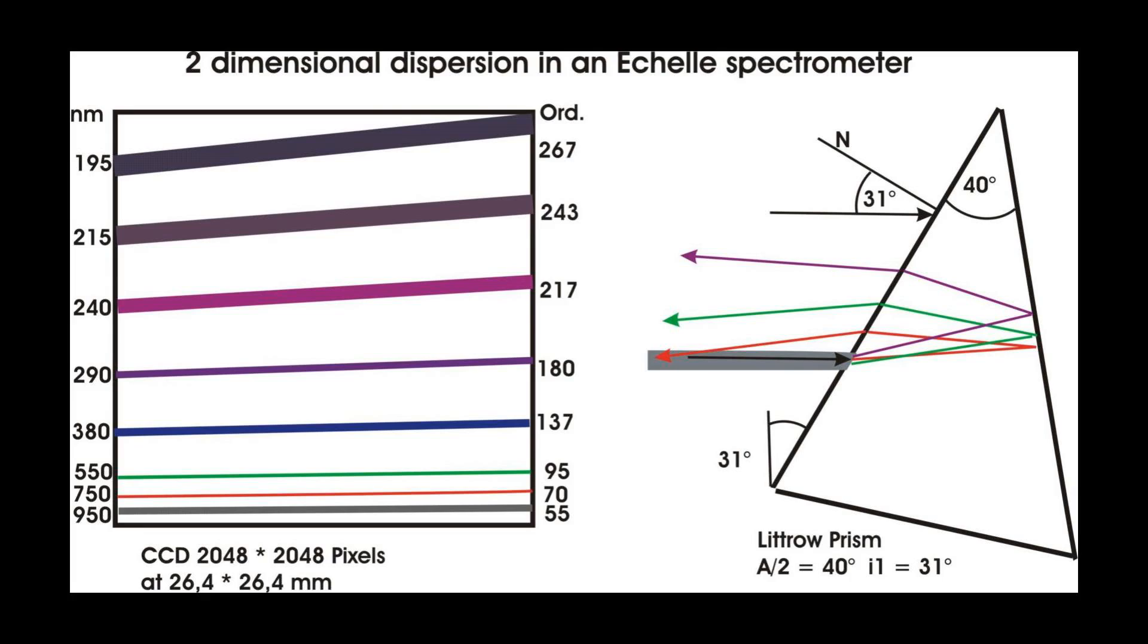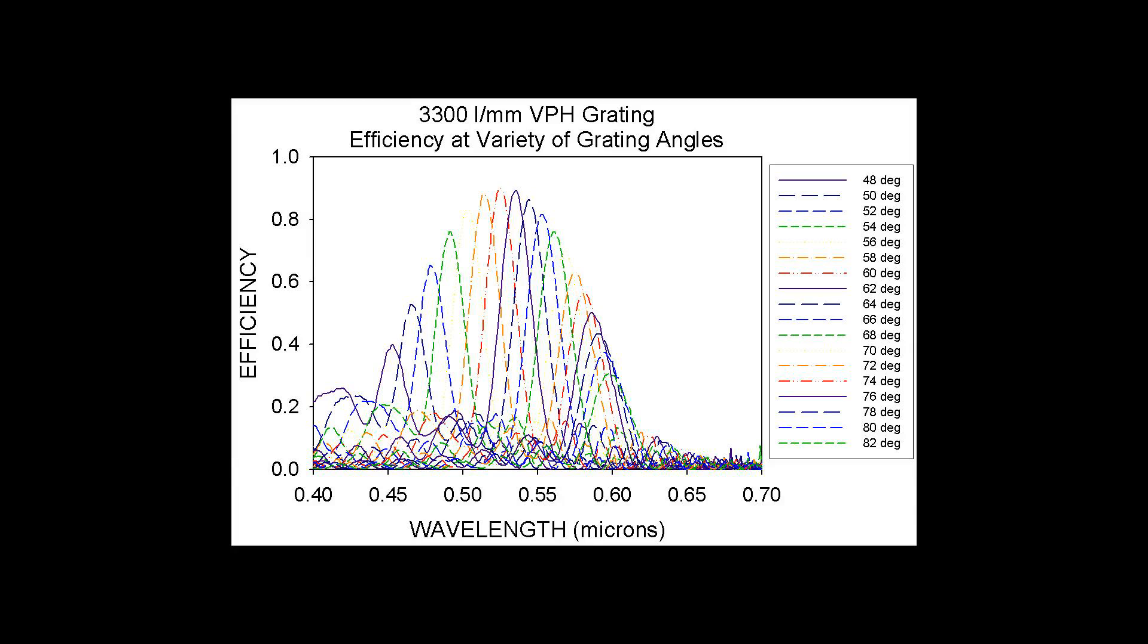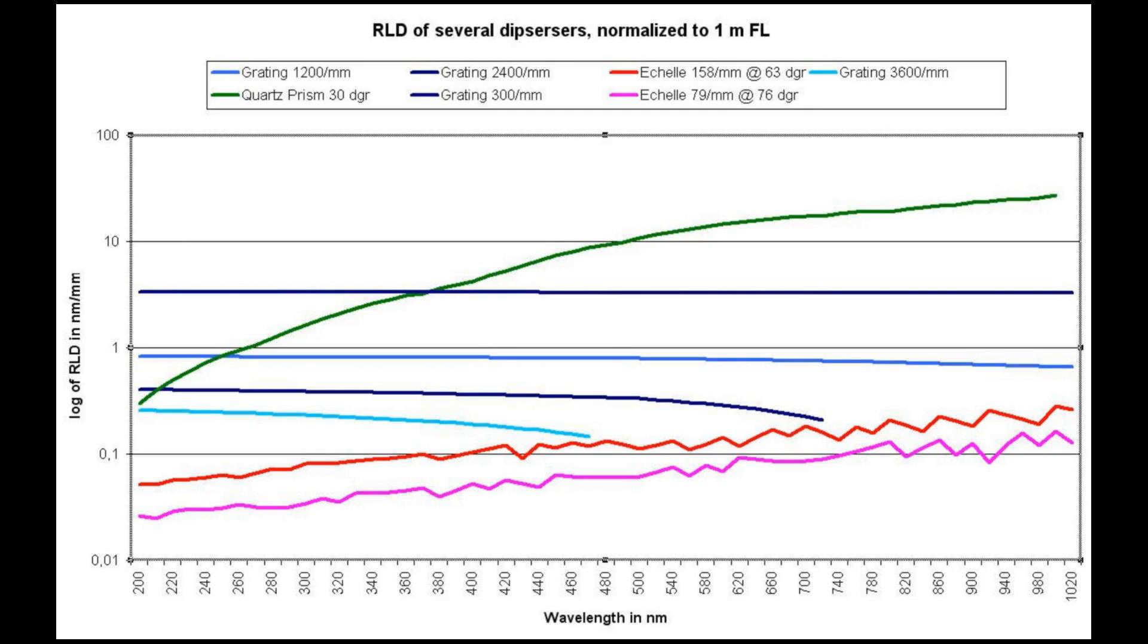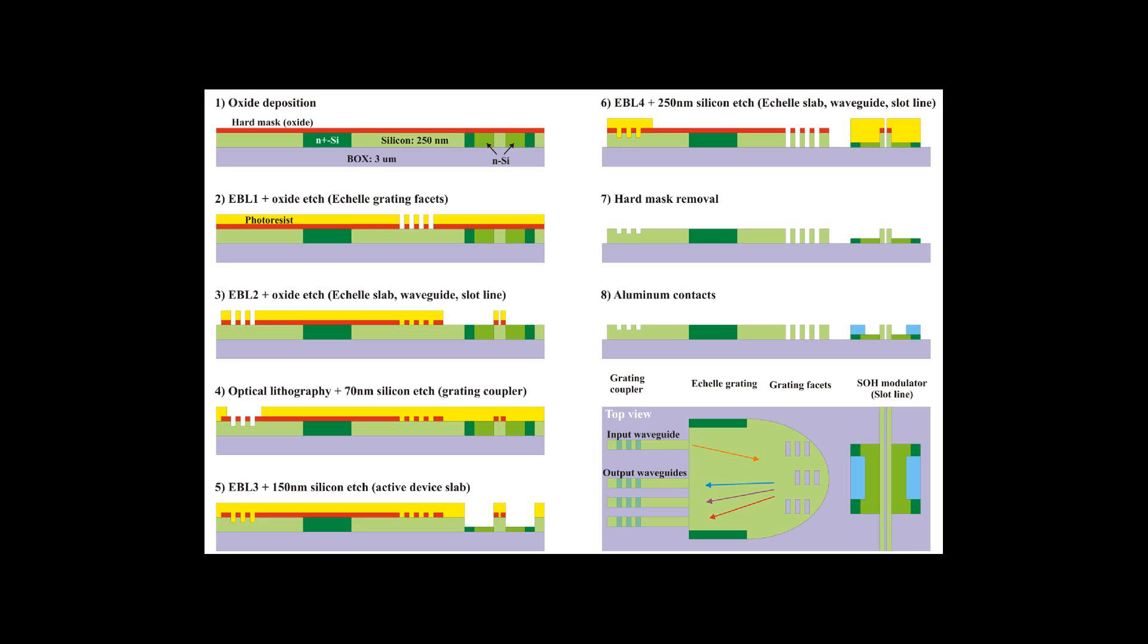History: The concept of a coarsely ruled grating used at grazing angles was discovered by Albert Michelson in 1898, where he referred to it as an echelon. However,